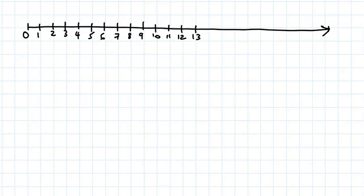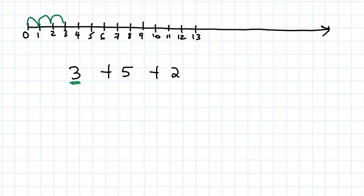If you are told to use a number line to solve three plus five plus two, you move three steps from zero — one, two, three. Then you move five more steps — one, two, three, four, five. Finally, you move two more steps — one, two. So your final answer is ten.